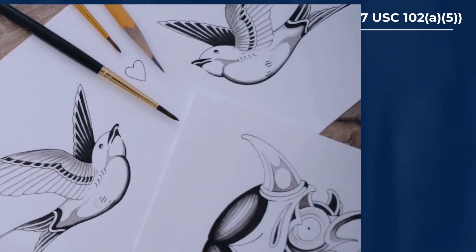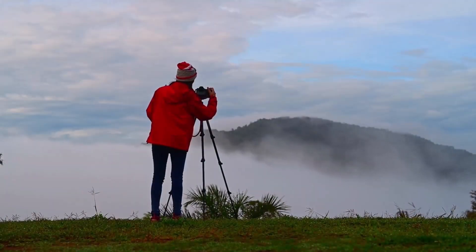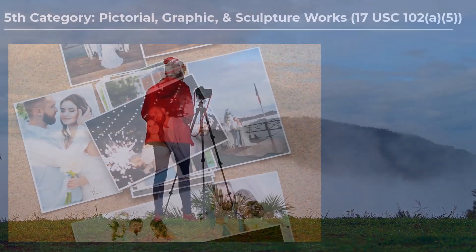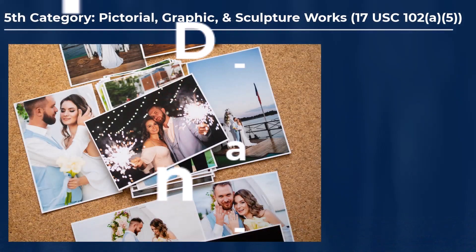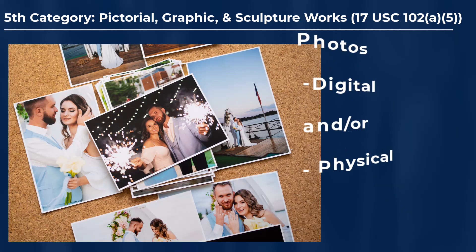Also included in this fifth category are photos and photographs, including digital photos and digital photographs. Photos are basically pictorial works — you could say they are a subtype of two-dimensional, 2D, static, and non-moving art, which would be included in this fifth category.